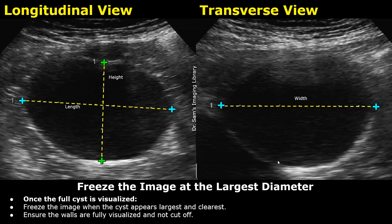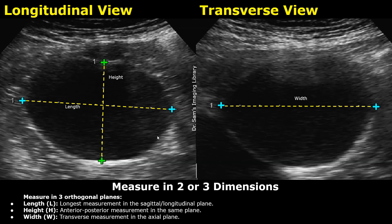Usually in the longitudinal plane, two measurements can be taken. This image shows a longitudinal view of a large hepatic cyst. The length is usually the measurement taken in this view along the long axis of the cyst. The height is the anteroposterior measurement, the AP measurement.